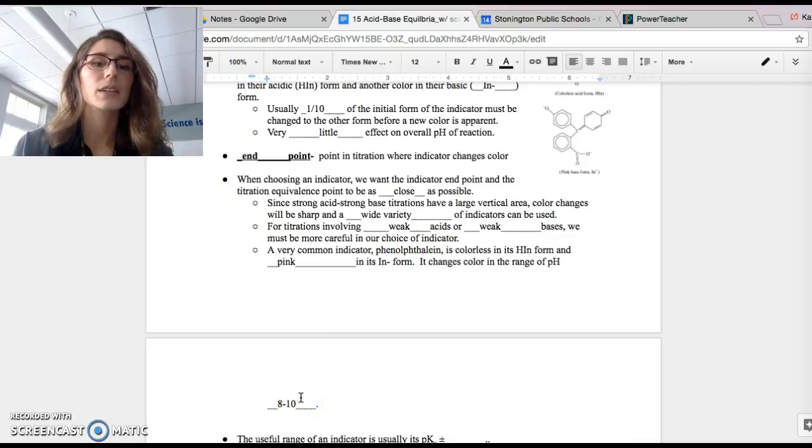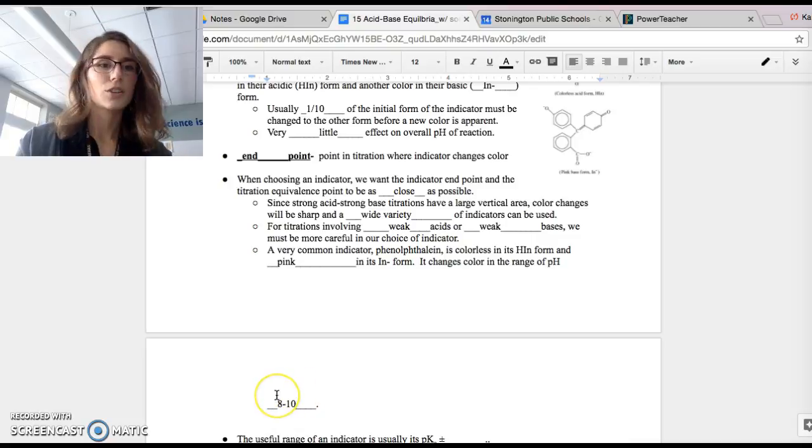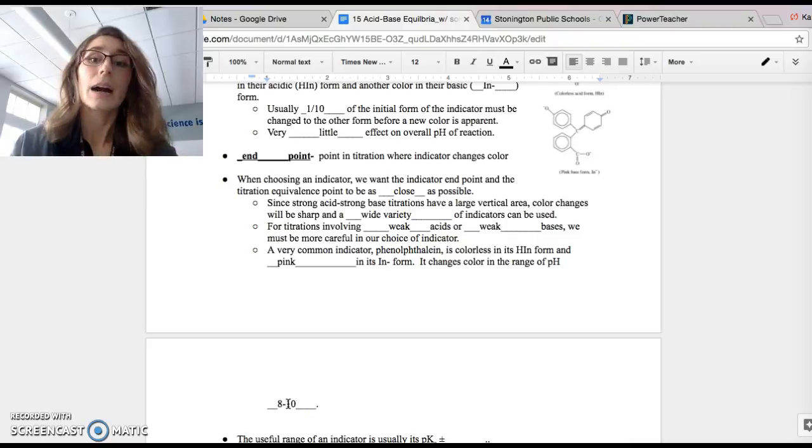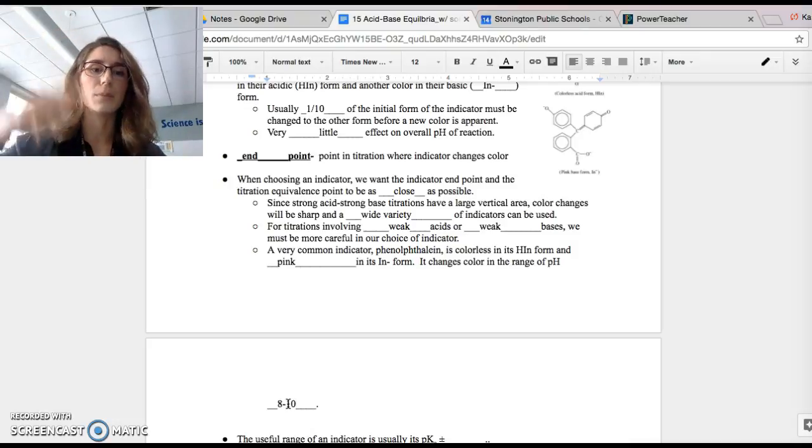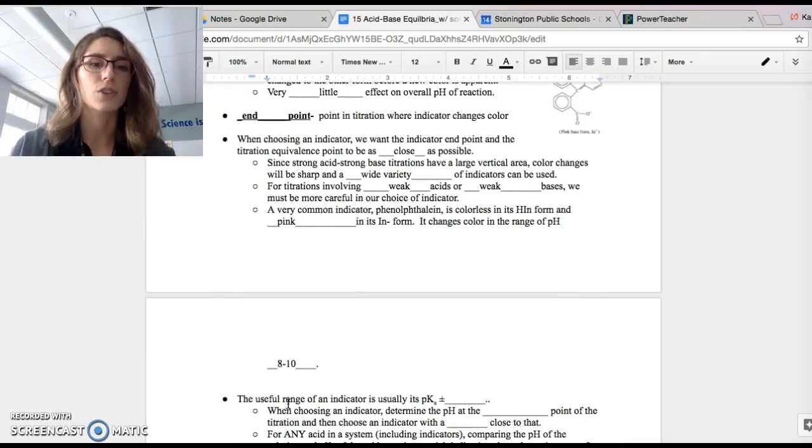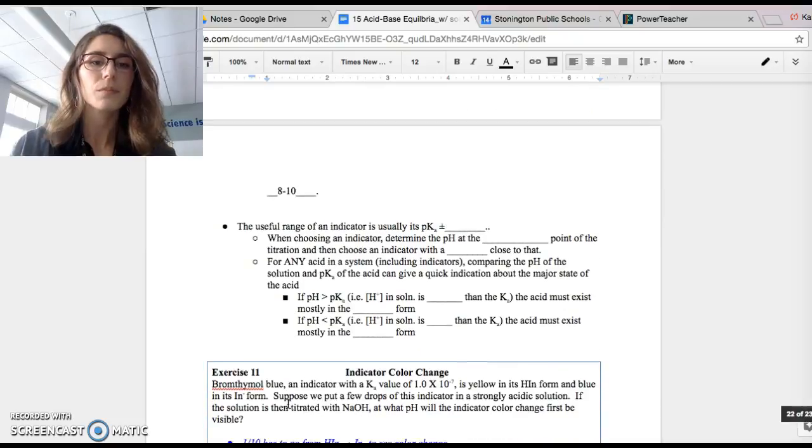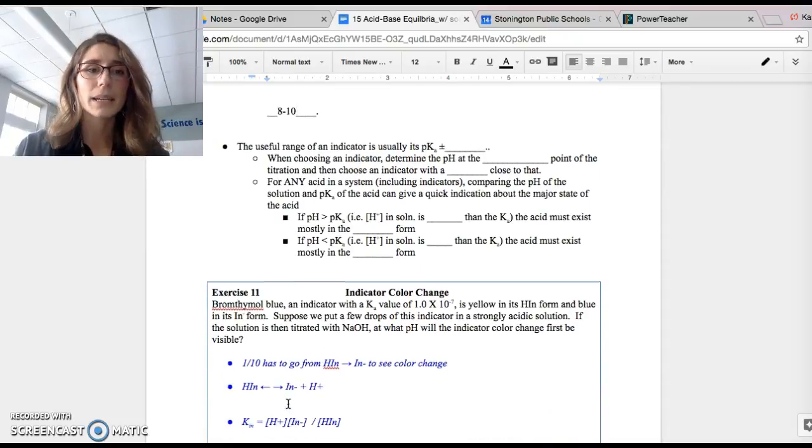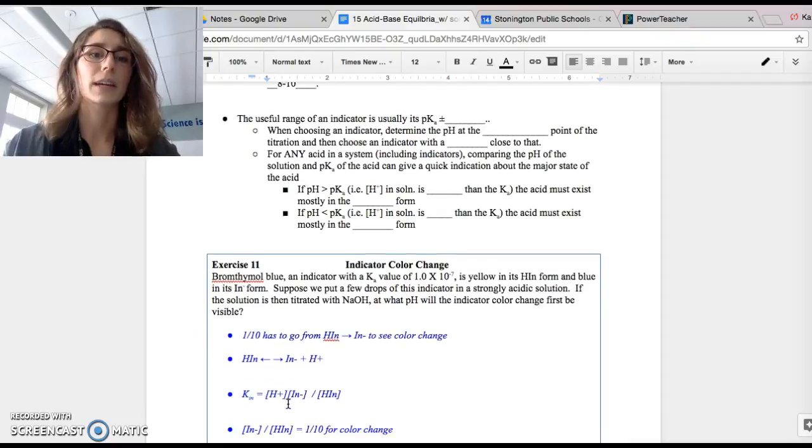We use phenolphthalein for a strong acid, strong base titration, which we know the equivalence point for that is at 7. Phenolphthalein does not change color at pH 7. It changes between pH 8 and 10. However, since we were doing a strong acid, strong base titration, it was still effective because there's a large jump in pHs. So we still saw the color change occur right as we reached the equivalence point. So it was okay to use for our strong acid, strong base titration. Again, when we're doing a weak acid or base titration, we must be more careful.